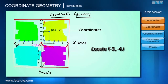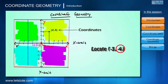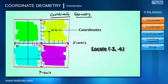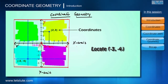Suppose we are given the coordinates minus three comma minus four and we want to locate this point. We first take the x-coordinate, which is minus three, and then the y-coordinate, which is minus four. We can see that they intersect at that value, so the point is at (-3, -4). This is how coordinates work.